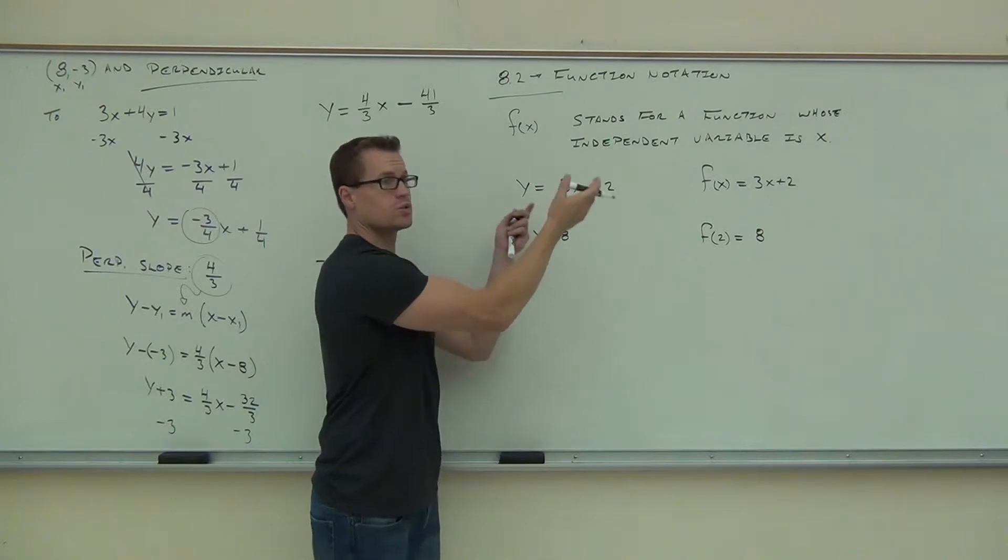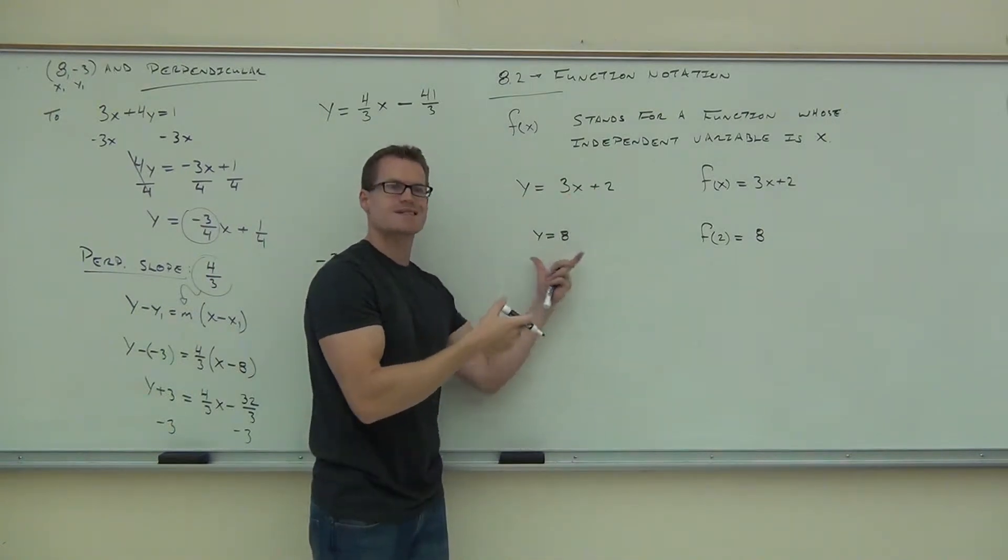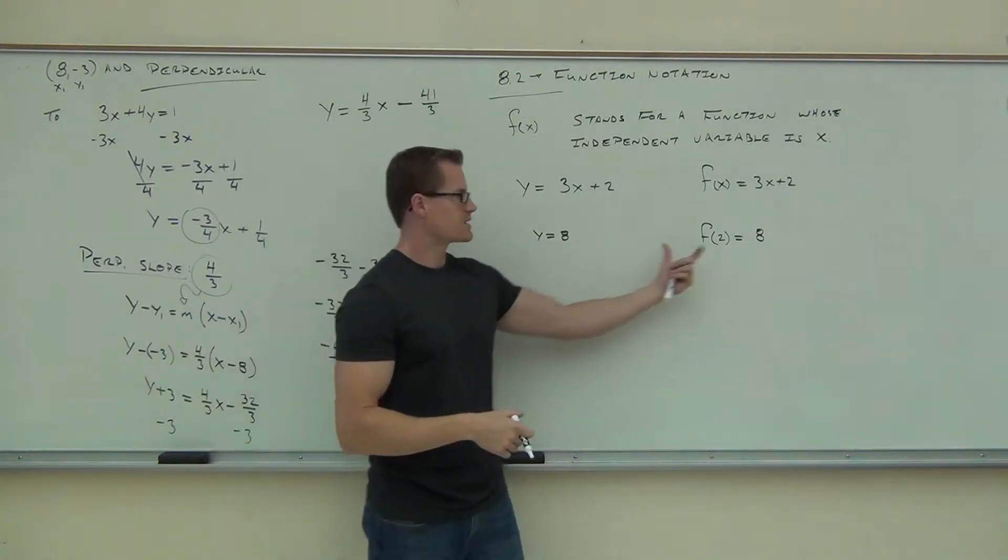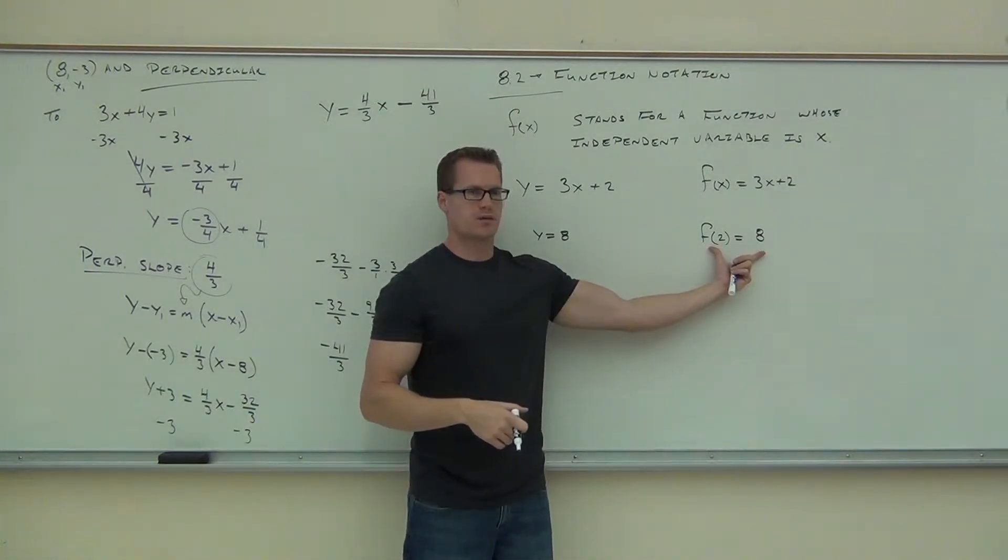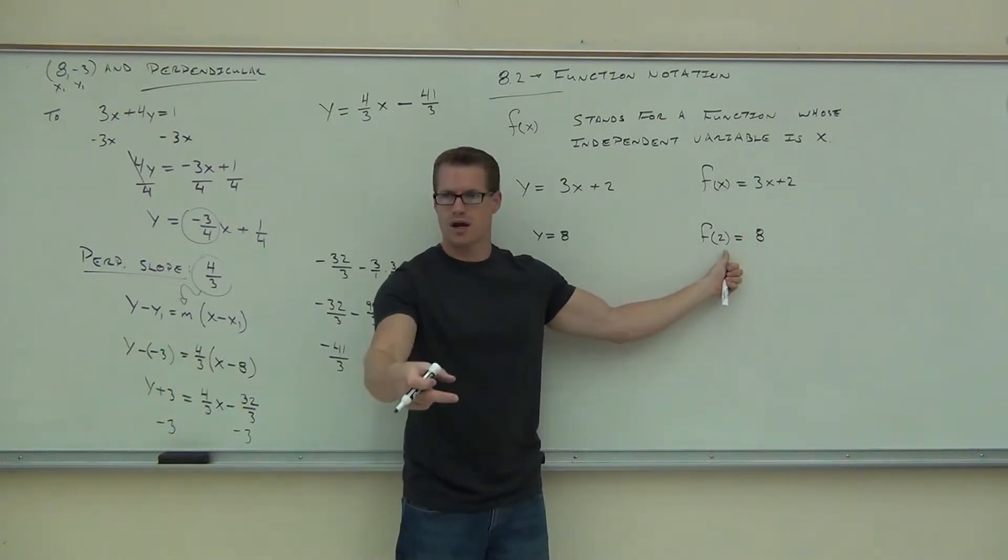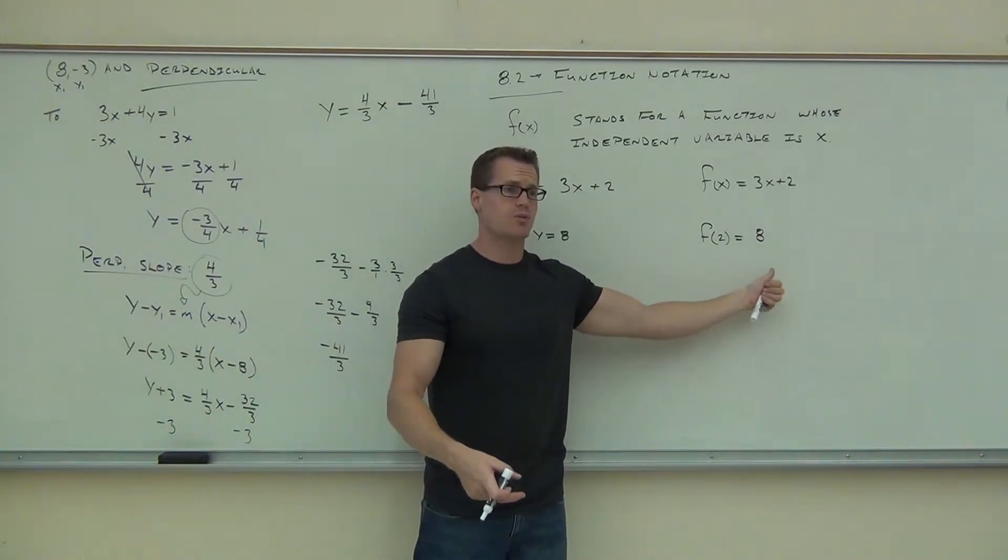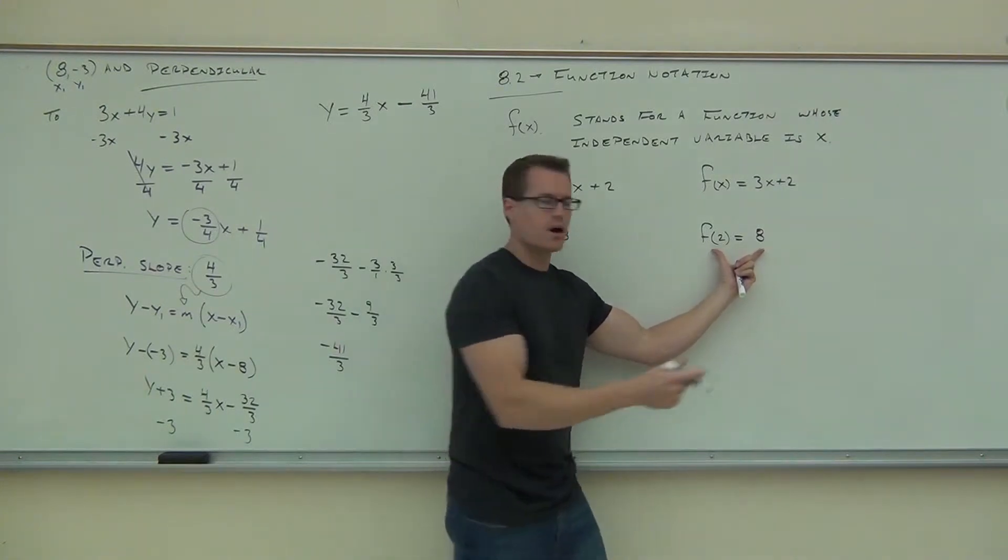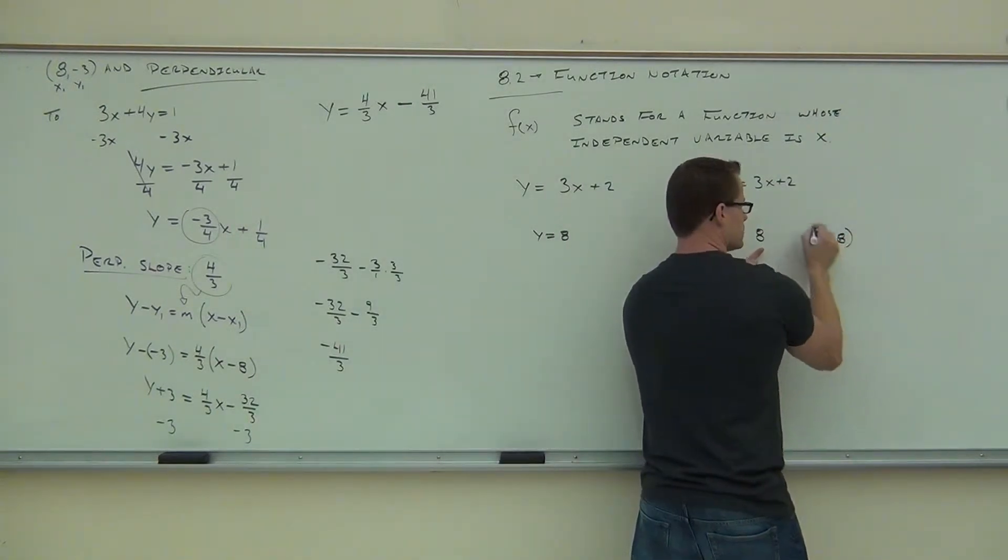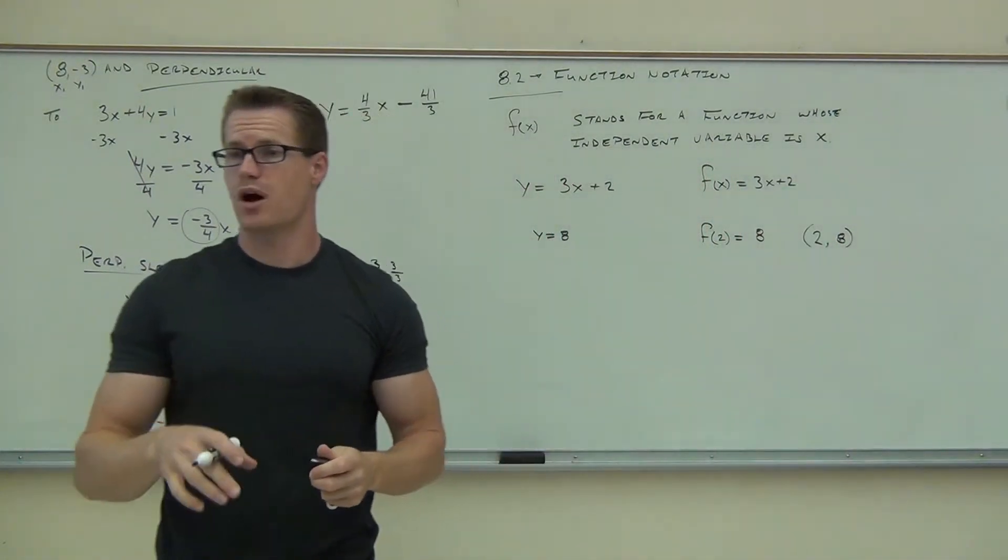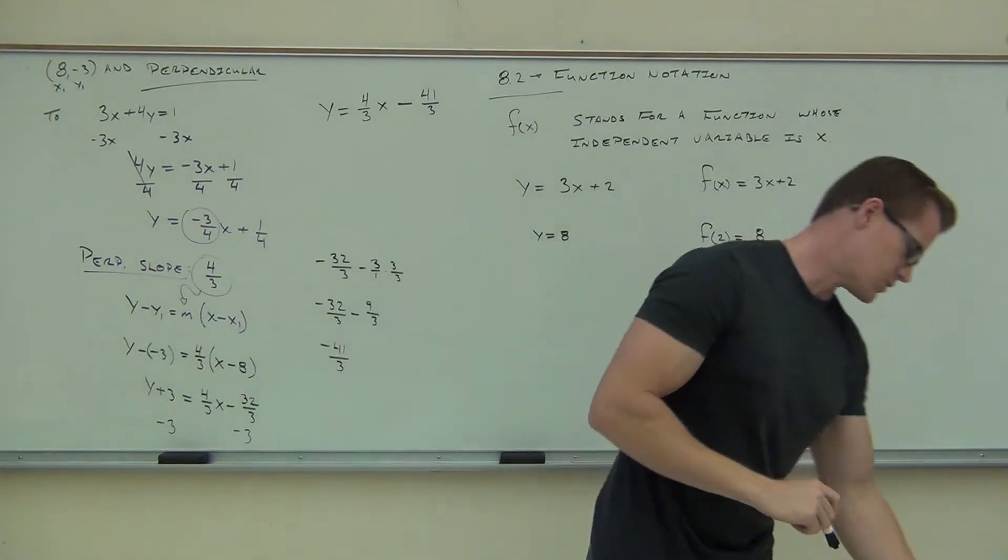So here, if you plug in 2, I just told you that, and you know it. It doesn't say that here, so if someone else were reading this, they'd have to do the work backwards to figure out what you plugged in. Here I say, what did you plug in? 2. Look how it took the place of x. You plugged 2 in for x. And what did you get out of it? 8. This gives you an ordered pair. This gives you a point. Anytime you see this function notation, you can say, I plugged in 2, I got out 8. That's kind of nice. It makes things a little bit easier for someone else who didn't do the problem to recognize your points.